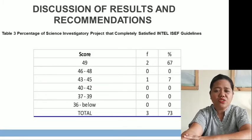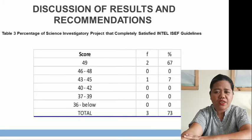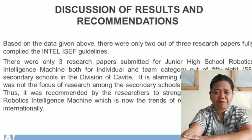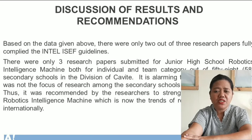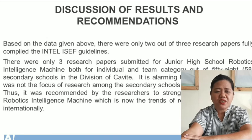Table 3 shows the percentage of science investigatory projects that completely satisfied the Intel ISEF guidelines. There was only one research paper submitted for junior high school robotics and intelligence machine, both in individual and team categories, out of 36 junior high schools in the Division. It is alarming that this kind of research was the focus among junior high schools in the Division. Thus, it was recommended by the researchers to strengthen the researches on robotics and intelligence machines in order to know the trends of science nationally and internationally.